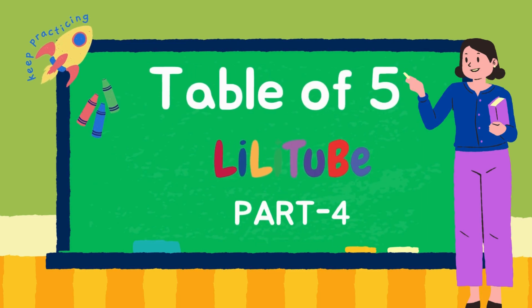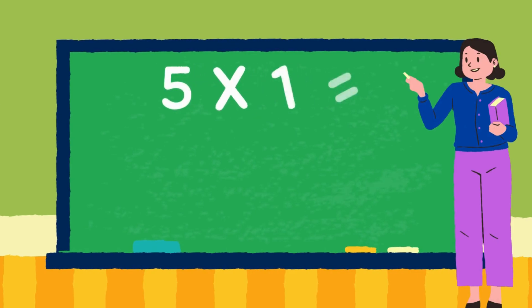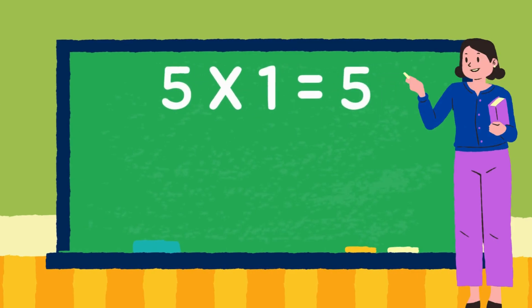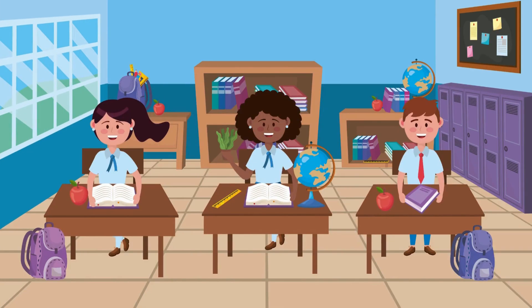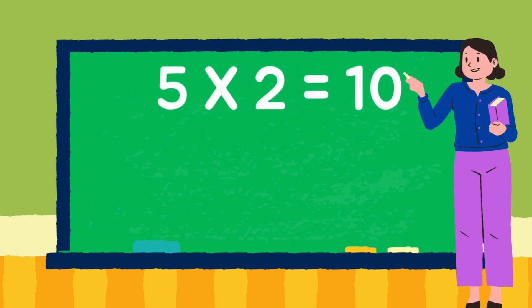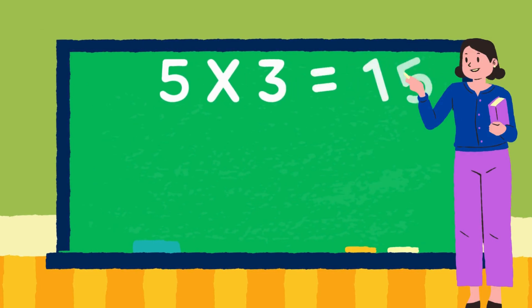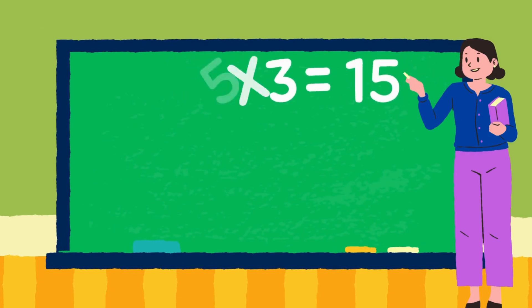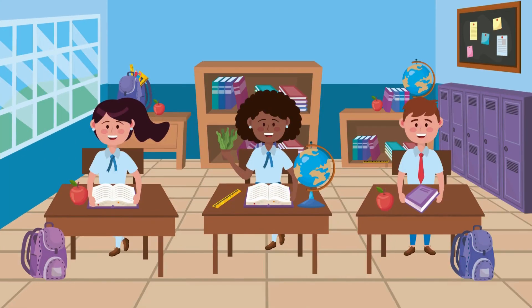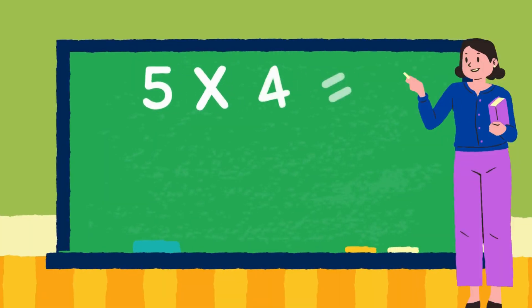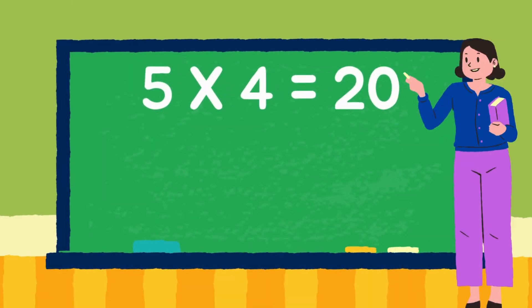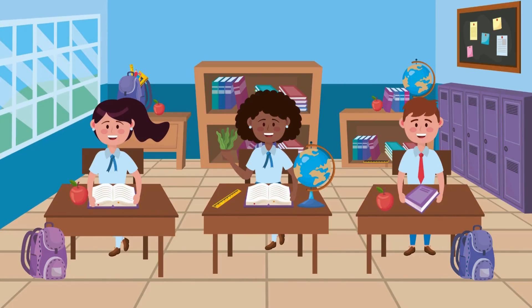Let's learn table of 5. 5 ones are 5. 5 twos are 10. 5 threes are 15. 5 fours are 20.